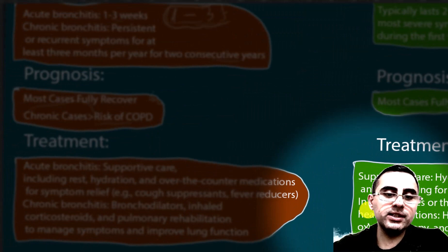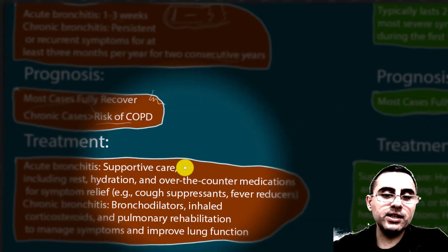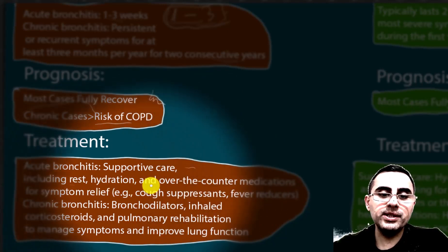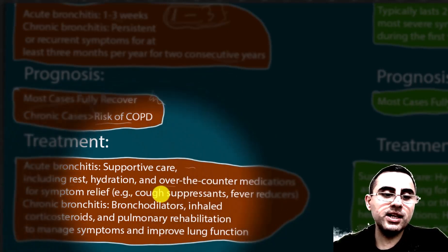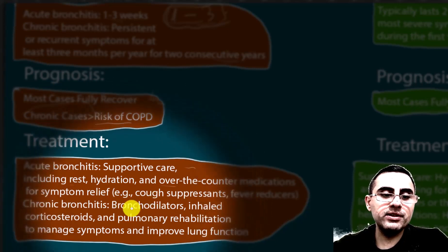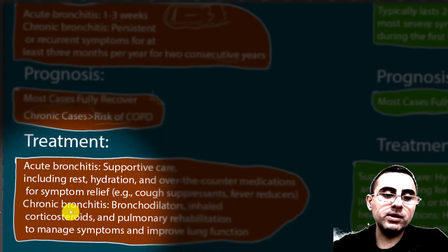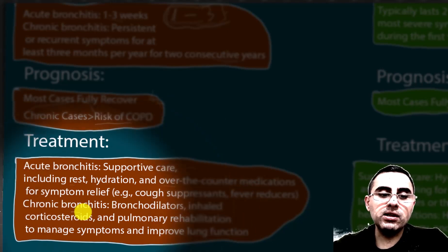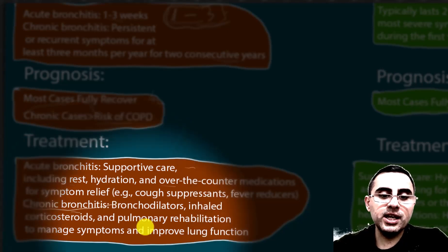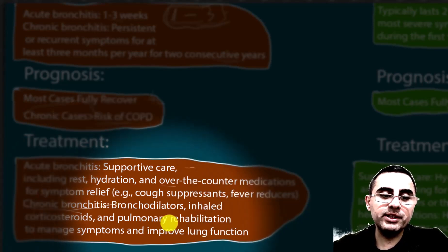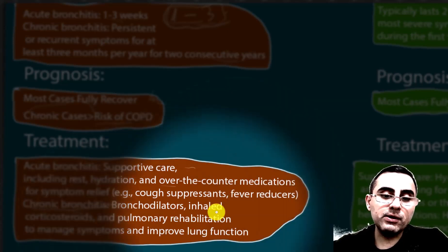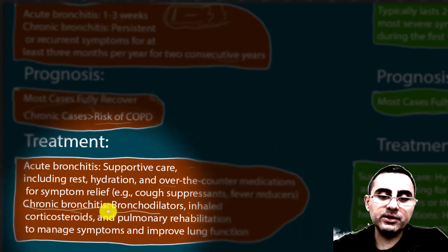Treatment of bronchitis includes supportive care — usually no specific treatment is needed. It includes rest, hydration, and over-the-counter medications for symptom relief such as cough suppressants and fever reducers. For chronic bronchitis, bronchodilators, inhaled corticosteroids, and pulmonary rehabilitation are recommended, and improvement of lung function is possible.